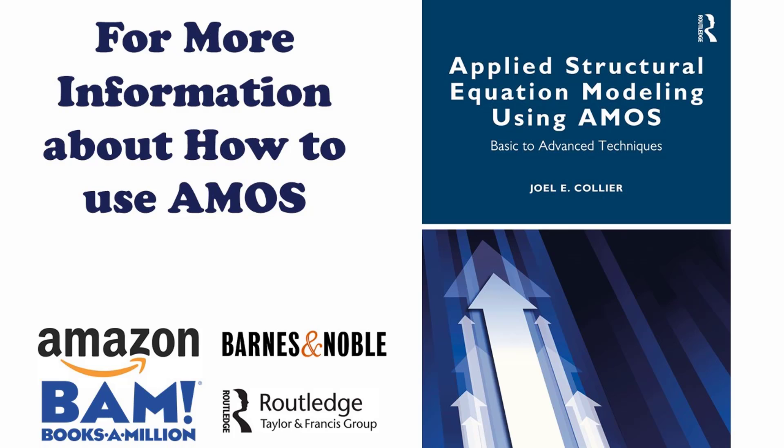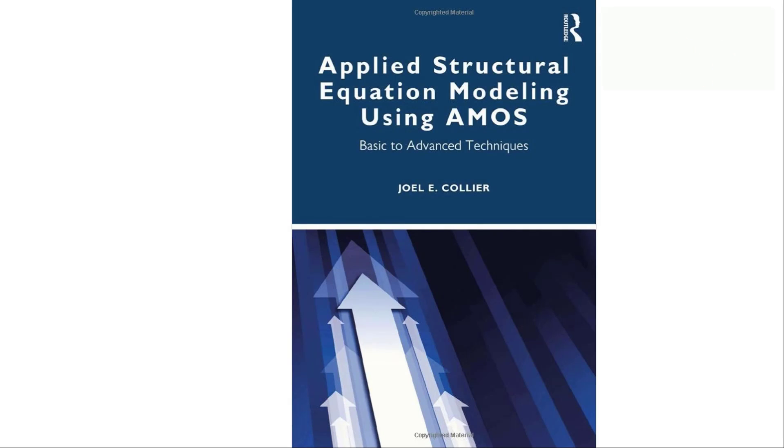The best way to assess discriminant validity right now is clearly the heterotrait-monotrait — it's the most valid approach available. If you're looking for more information on assessing validity or running basic to advanced SEM models, check out my book. If you saw value in this video, please like and subscribe for more videos to come. That's all I've got for this week — have a great week, good people.